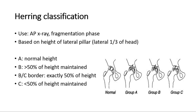The Herring classification uses an AP X-ray view of the hip and must be done during the fragmentation phase. It is based on the height of the lateral pillar, which is the lateral one-third of the femoral head. There are three groups: group A is normal height, group B is more than 50% of the height maintained, and group C is less than 50% of the height maintained. There is also a BC border group where the height is exactly 50% of the original.